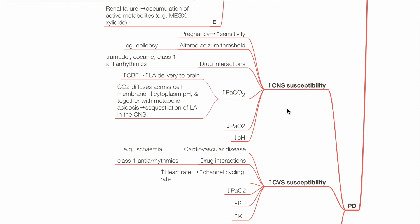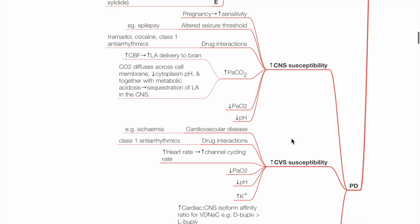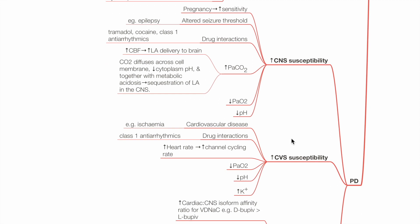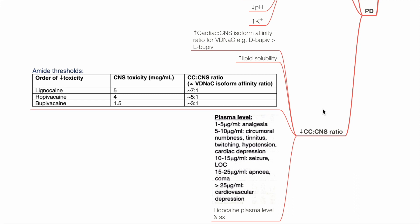CVS susceptibility to LA toxicity increases with CVS disease, drug interactions such as with class 1 antiarrhythmics, tachycardia, hypoxia, acidosis, and hyperkalemia. Reduced CC:CNS ratio increases LA toxicity due to increased affinity of the LA to cardiac voltage-gated sodium channels and high lipid solubility — bupivacaine having a CC:CNS ratio of 3:1 (some sources quote 2:1), ropivacaine 5:1, and lidocaine 7:1.